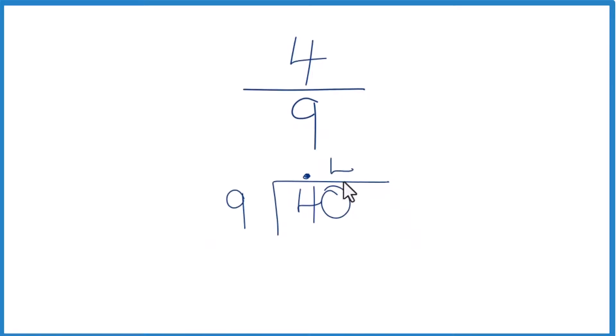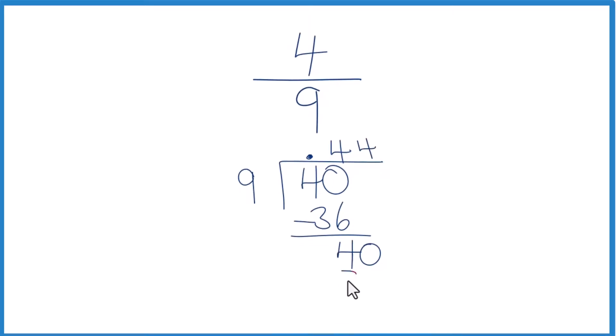9 times 4, that's 36. We subtract, we get 4. Again, 9 doesn't go into 4, we're going to make it 40 and move over 1 here. 4 times 9 is 36. We subtract, we get 4 again.